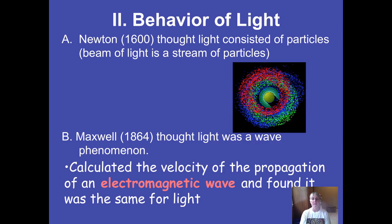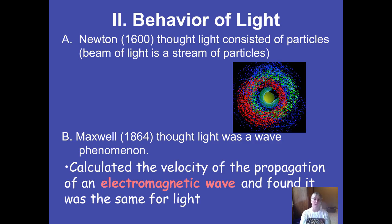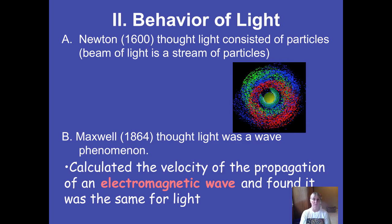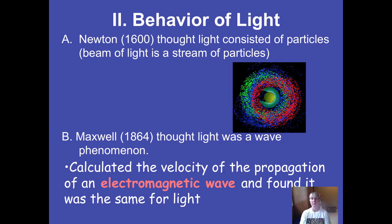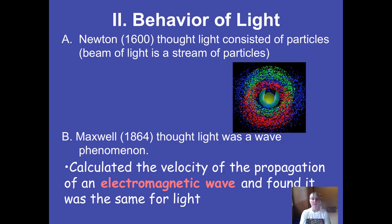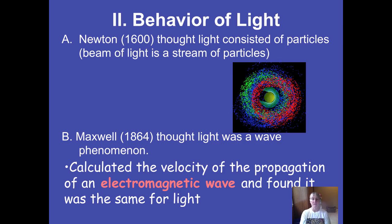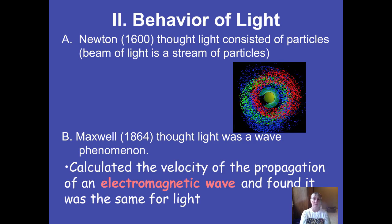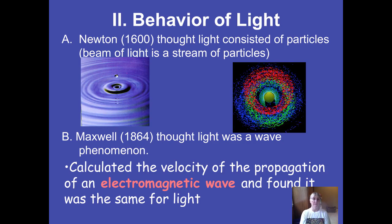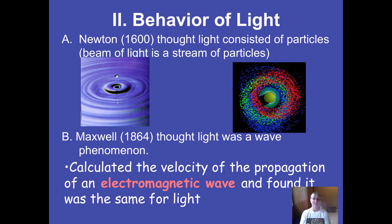Maxwell was able to calculate the velocity or speed of an electromagnetic wave. Electromagnetic waves, as I mentioned in the previous podcast, could be anything from tiny gamma waves up to radio waves. He found that in a vacuum, the speed or velocity of one of these electromagnetic waves was the same as the speed of light.